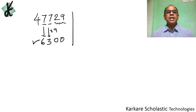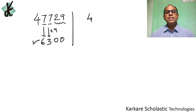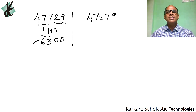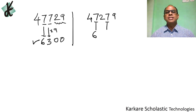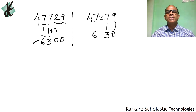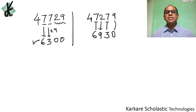Now take another example: 47279. What is the difference between the place values of the two 7s? The first two steps are the same — the difference is a multiple of 9, so 9 × 7 = 63. But this time there is one digit (2) in between the two 7s, so that digit should be replaced by 9, giving an answer of 6930.